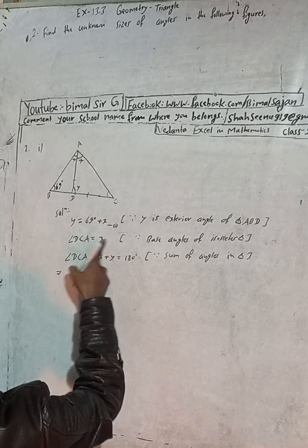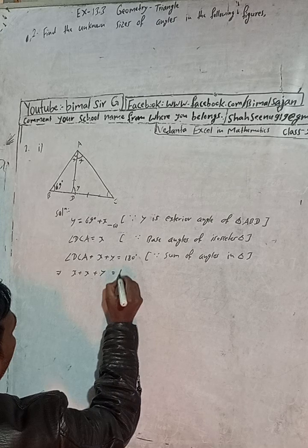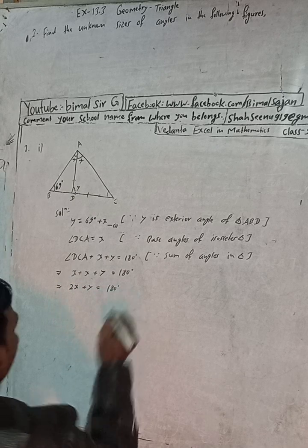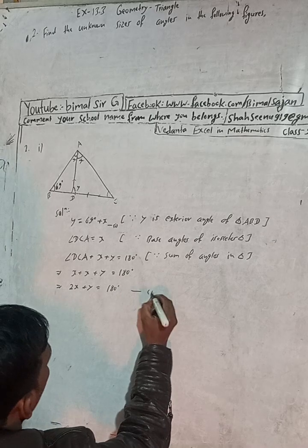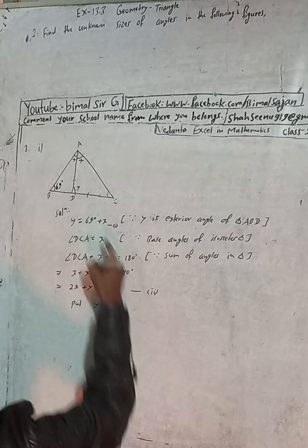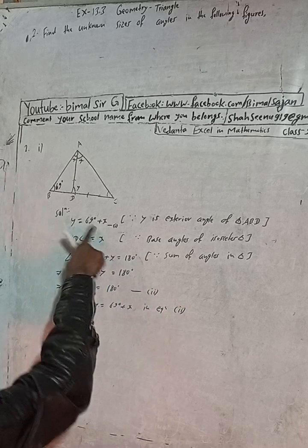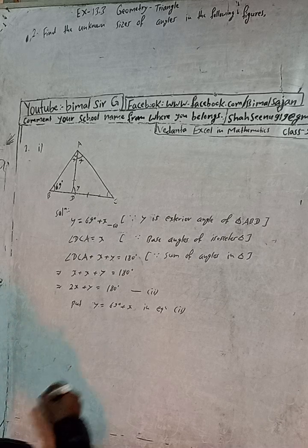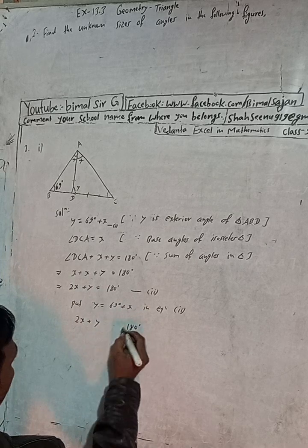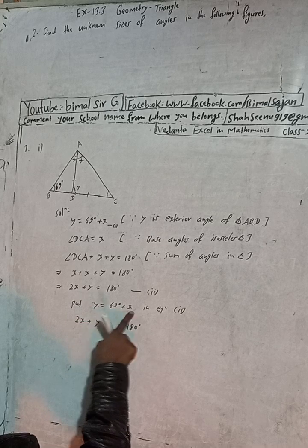Writing the value of DCA: x plus y plus y equals 180 degrees, which gives 2x plus y equals 180 degrees. This is Equation 2. Now substitute y equals 69 degrees plus x from Equation 1 into Equation 2. In place of y, put 69 plus x.